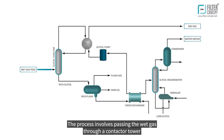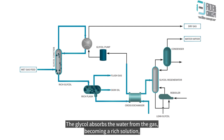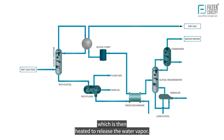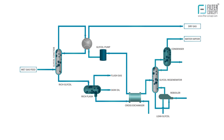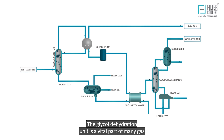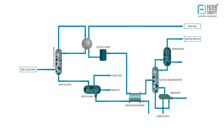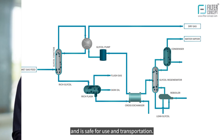The process involves passing the wet gas through a contactor tower containing a liquid desiccant, usually glycol. The glycol absorbs the water from the gas, becoming a rich solution, which is then heated to release the water vapor. The regenerated glycol is then cooled and recycled back to the contactor tower. The glycol dehydration unit is a vital part of many gas processing plants as it ensures that the natural gas is free of water vapor and is safe for use and transportation.